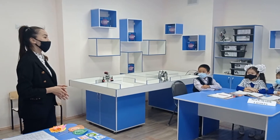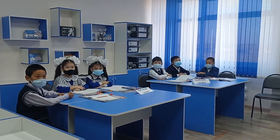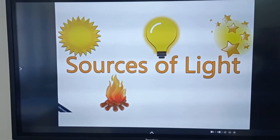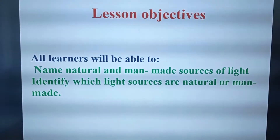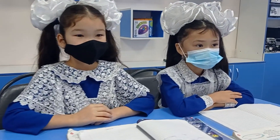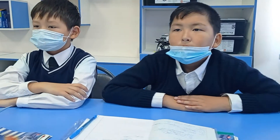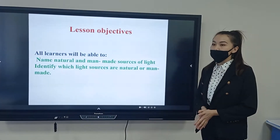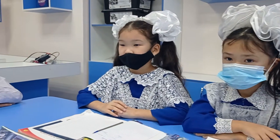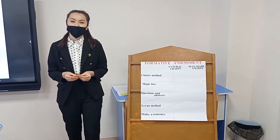What will our lesson be about? Natural light and man-made light — sources of light. Our lesson: source of light. Lesson objectives: name natural and man-made sources of light, and identify which light sources are natural or man-made. This is a team competition by groups — the team with the most points wins.